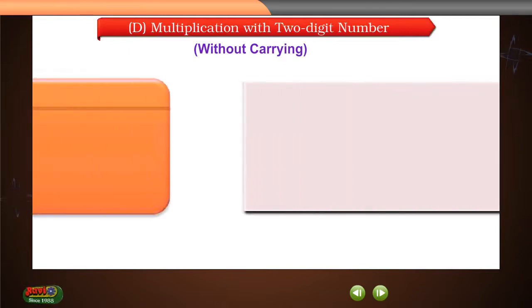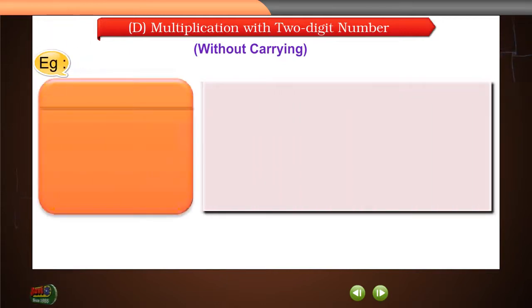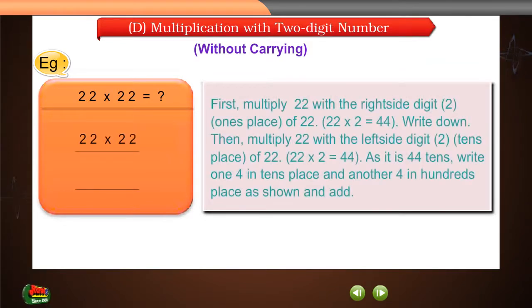Example: 22 into 22 is equal to how much? First, multiply 22 with the right side digit to ones place of 22. 22 into 2 is equal to 44. Write down.